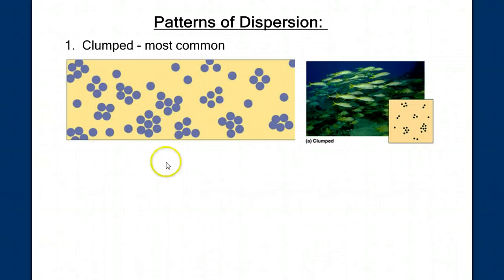Let's start with patterns of dispersion. The most common pattern of dispersion is called clumped. And it looks like this. Organisms are spread out throughout the habitat, but they're not spread out in a homogeneous manner. They clump together in these clusters.